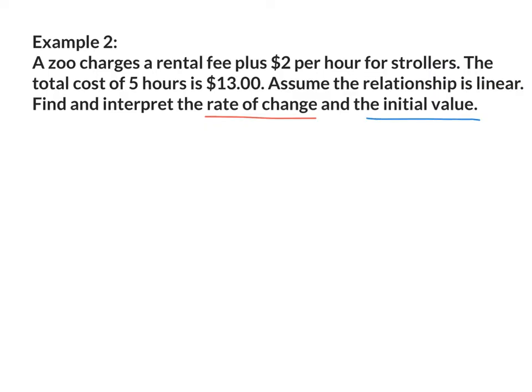They're telling us that the rate of change is $2 per hour. This is also known as my slope. So I can actually start my equation y equals 2x plus b. I don't know what b is, but they're giving us a situation that the total cost of 5 hours is $13.